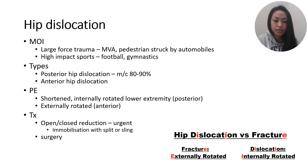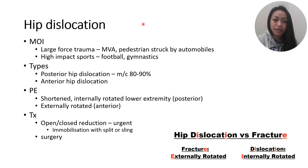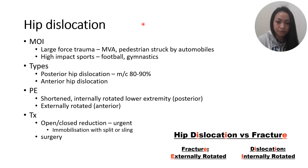Moving on to hip dislocations. The mechanism of injury is large force trauma — like a motor vehicle accident, pedestrians being hit by cars, collision accidents, or high impact sports like football and gymnastics. There are two types: posterior hip dislocation and anterior hip dislocation. Posterior hip dislocation is the most common, occurring in about 80 to 90% of cases.